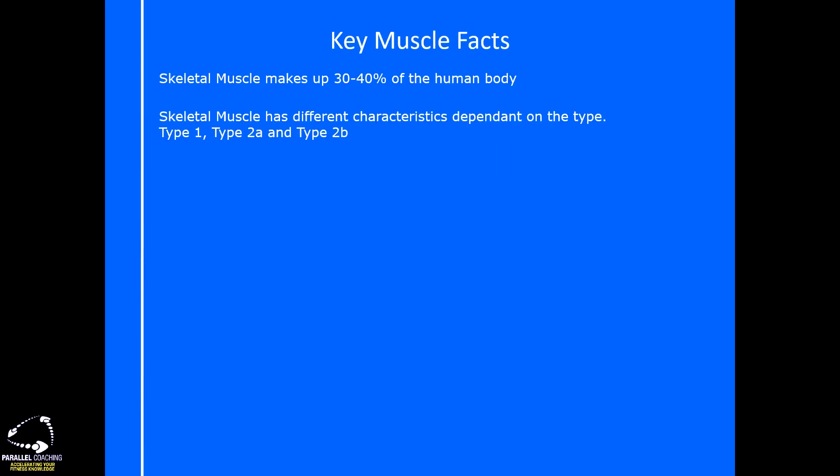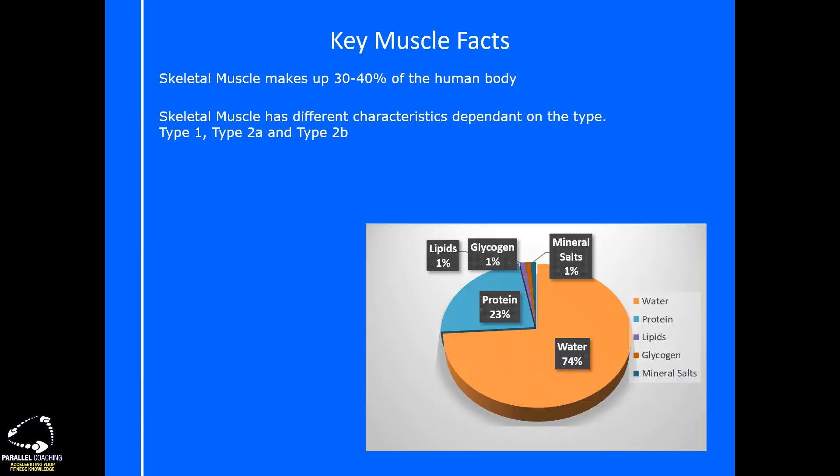First of all, skeletal muscle makes up 30 to 40 percent of the human body. That will vary person to person, but on average it's about 30 to 40 percent. There are lots of different muscle fiber types — you may have come across type 1 muscle fibers, type 2a, and type 2b — and we're talking about all of these within what we're discussing today, so regardless of the muscle fiber type, all of these same characteristics still apply.